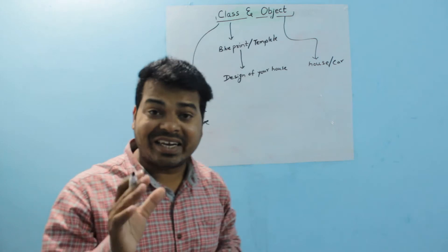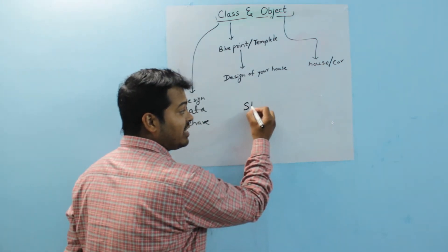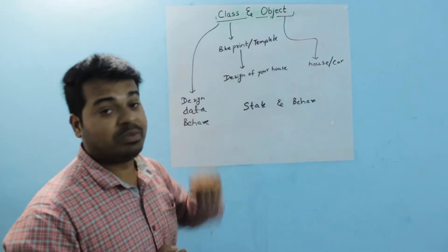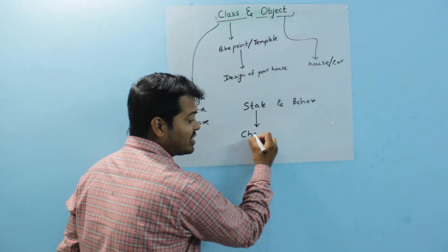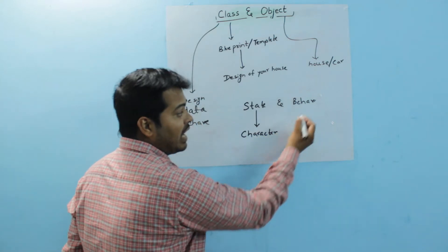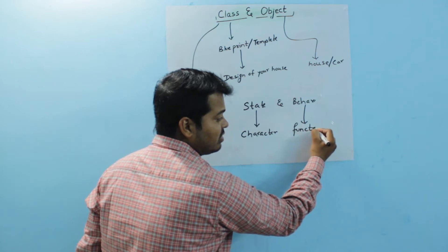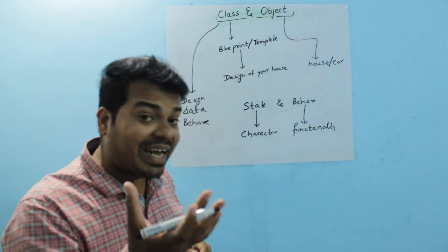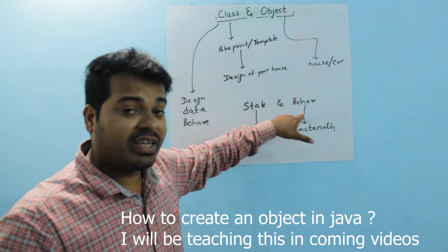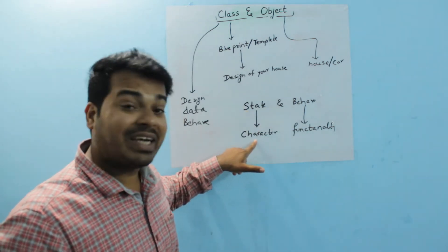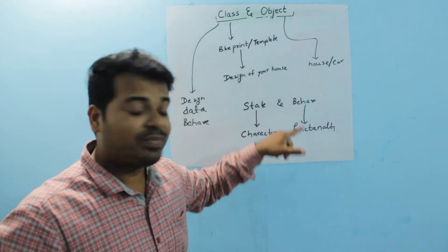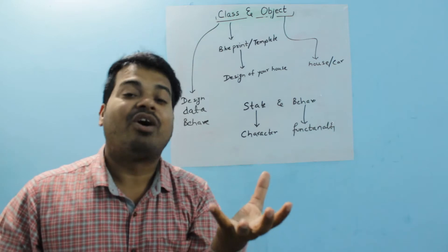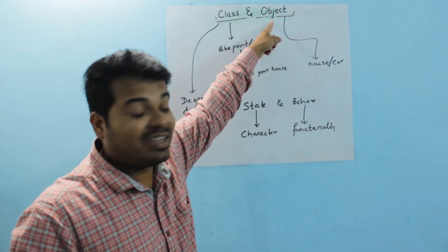What do you mean by object? An object is nothing but any entity which has its own state and behavior. What do you mean by state? State is nothing but the characteristics of an object. What do you mean by behavior? It is the functionality of an object. So your class is a blueprint or template to create an object, and it specifies the design, data, and behavior of that object.